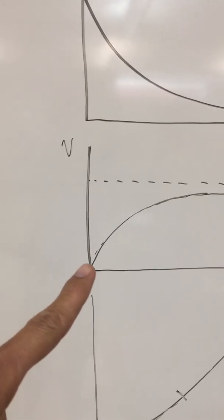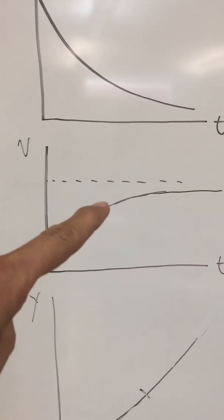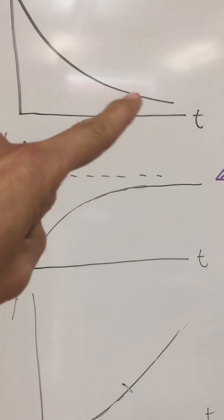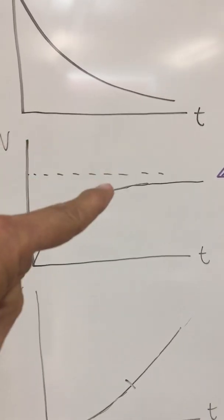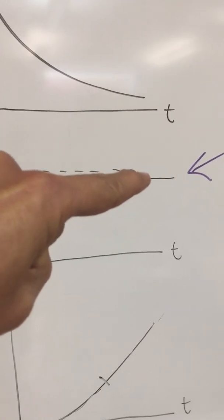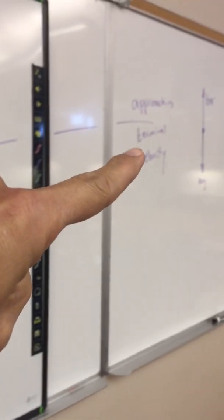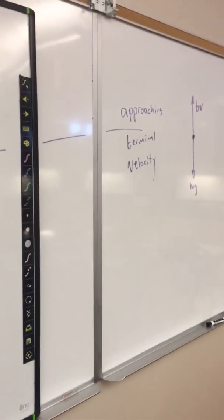Its velocity then increased at first, but eventually when the acceleration gets close to zero then the velocity almost becomes a steady value. We refer to that as approaching terminal velocity.